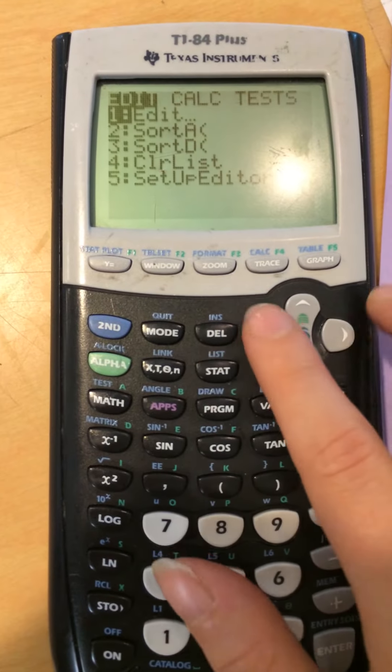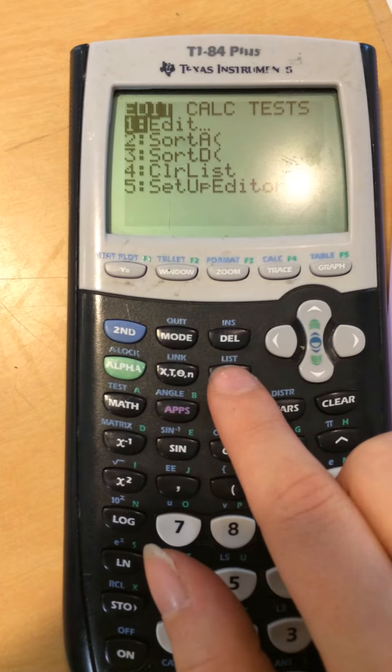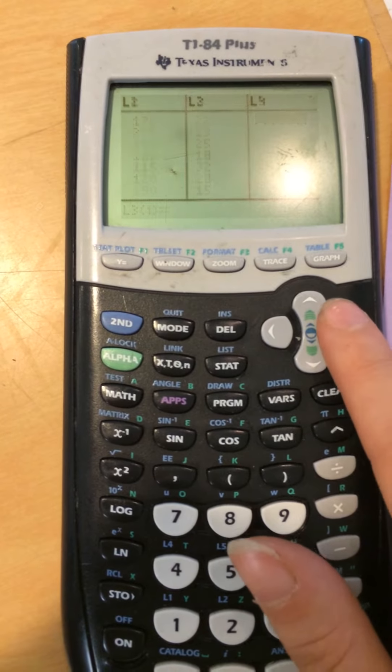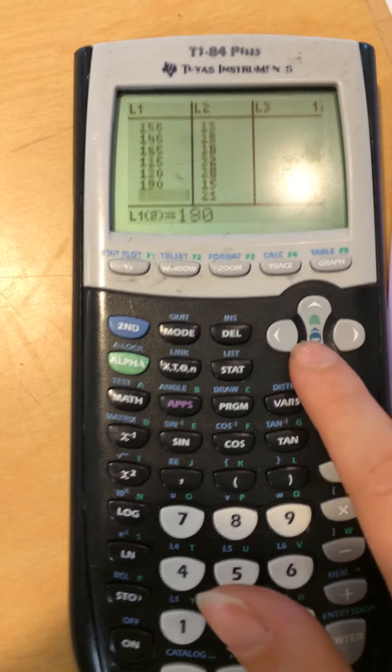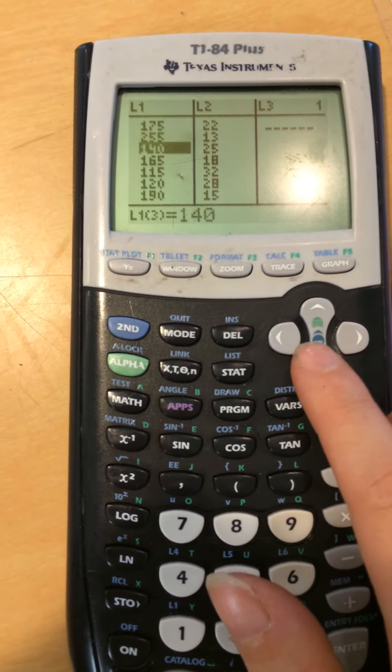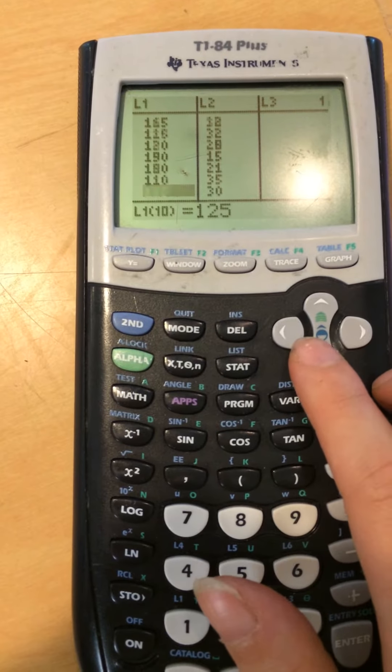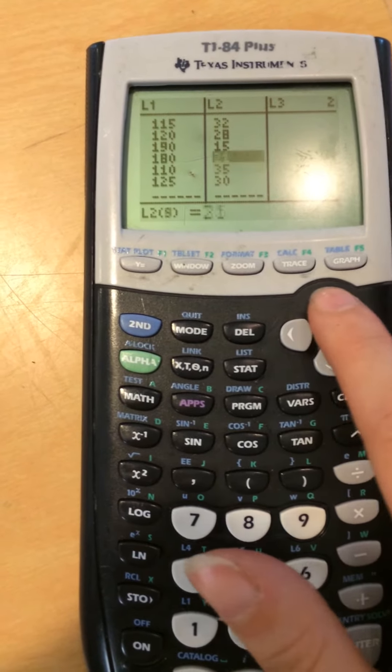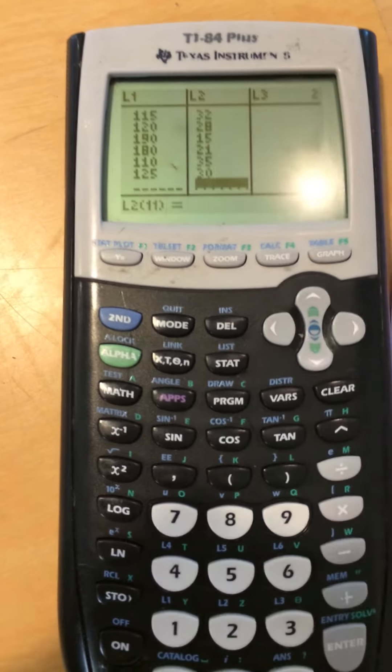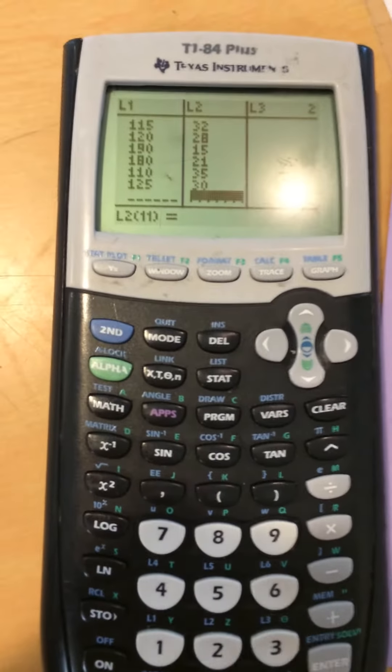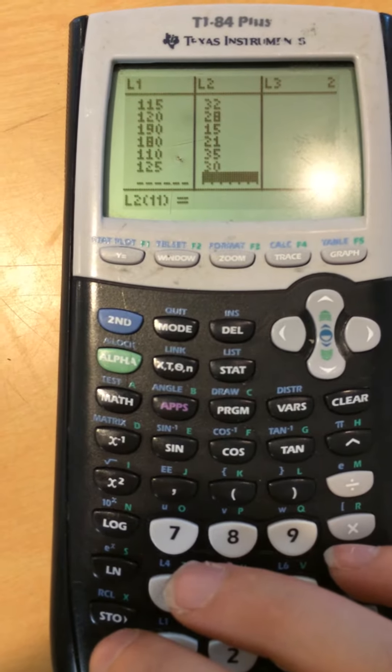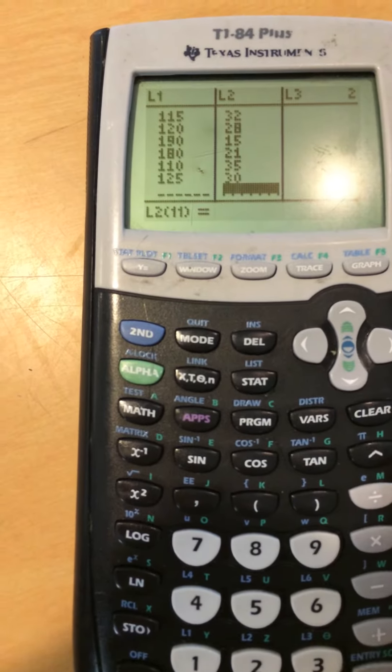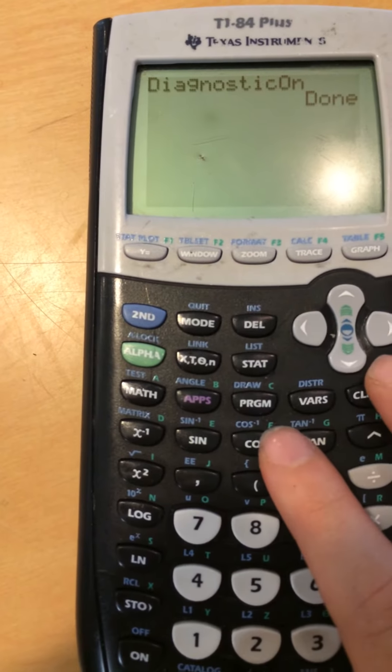So you press stat and then edit. This is where all your lists are. We're only working with two. These are our x values. Make sure they're correct. And then these are our corresponding y values. Make sure that's all right so you get the right values. Sorry, this is a little shaky. So that's done. We did stat, edit, put in your list 1 and L2. I can exit out of there.